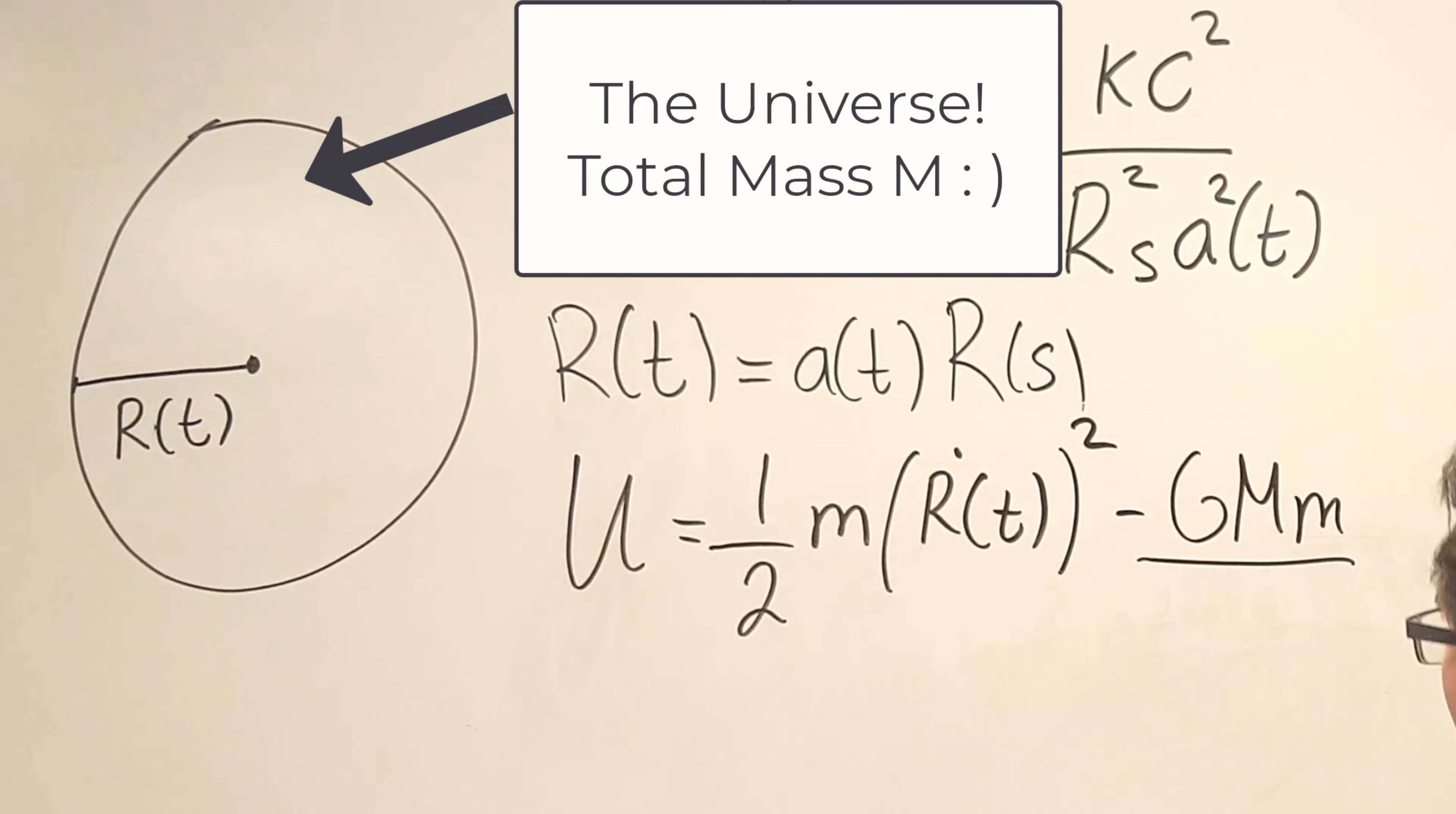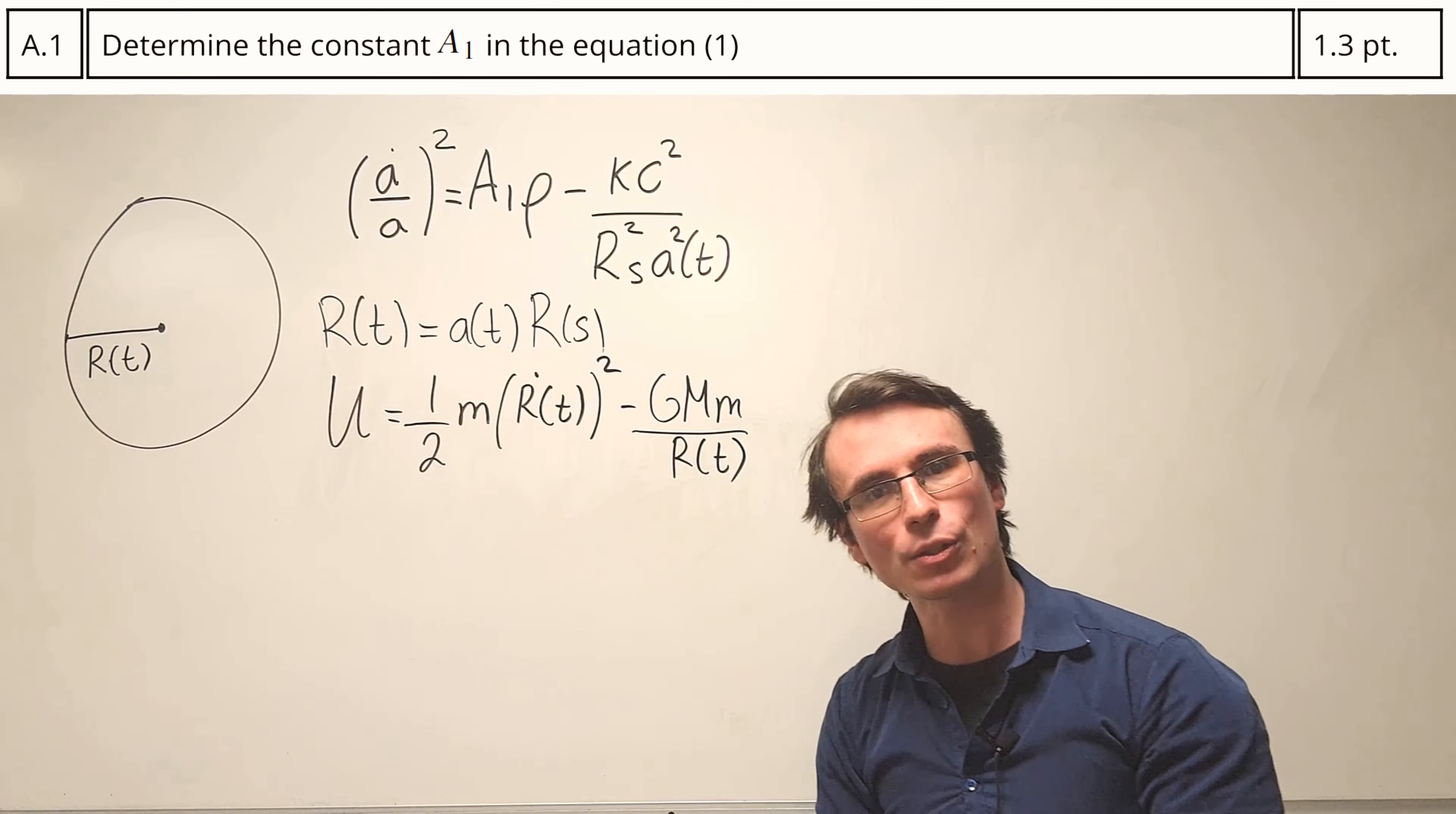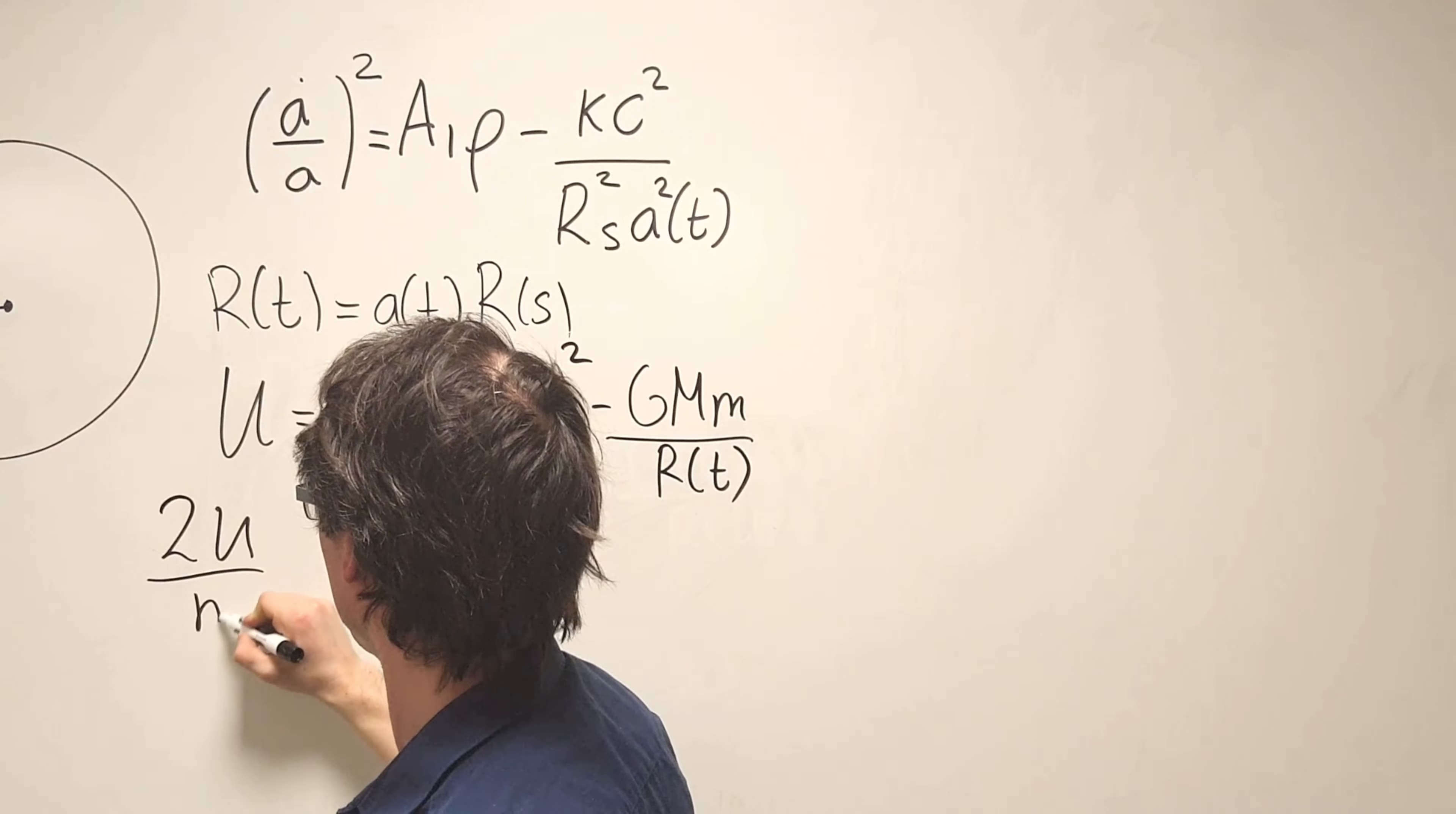This mass here is the total mass of everything contained within the universe divided by R(t). Now our task is to get those two equations into a form such as the one above. What I will do first would be to multiply both sides by 2 and then divide by m.